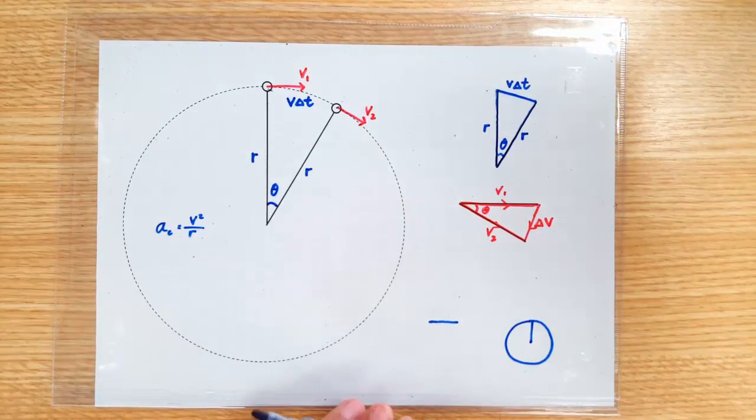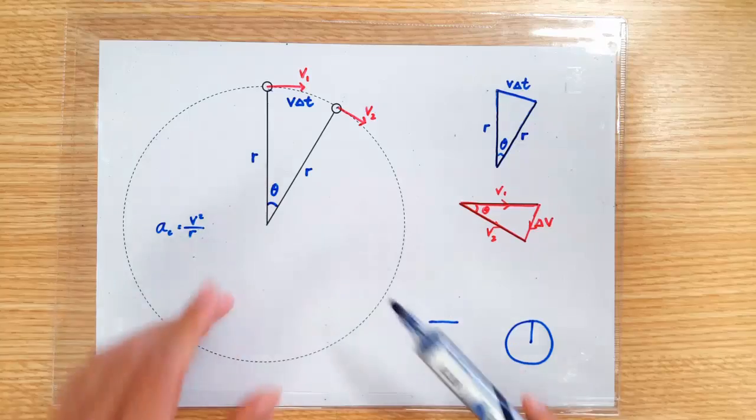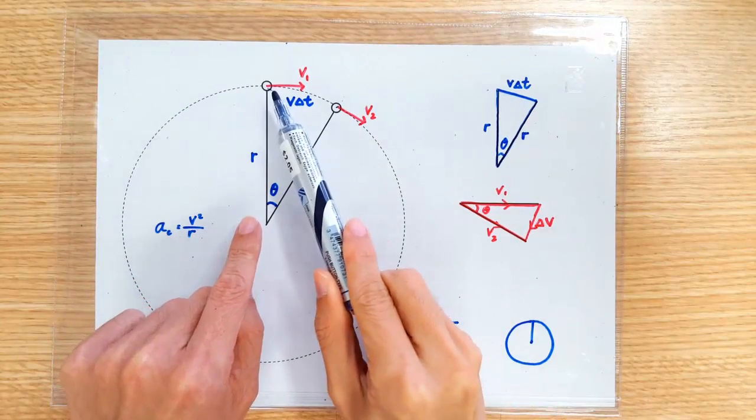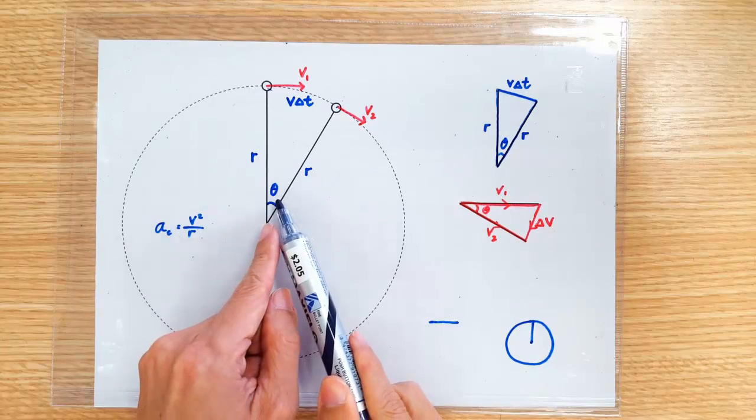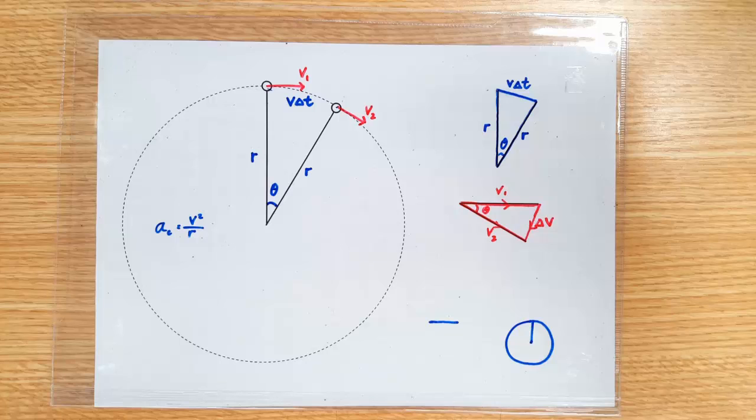So, some students are going to say, hey, are we cheating? Because the two lengths are not exactly the same, right? Not true, because we're trying to work out the instantaneous acceleration. So, the angular displacement is really very, very small. And when the angle is very, very small, the two lengths are really practically the same.